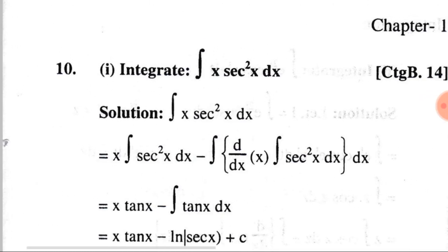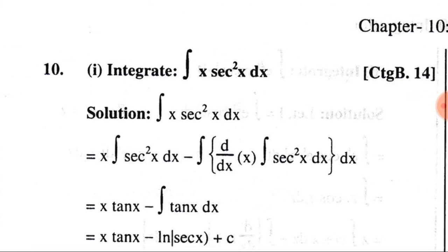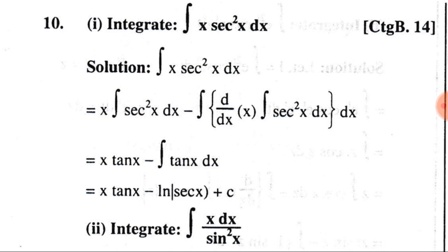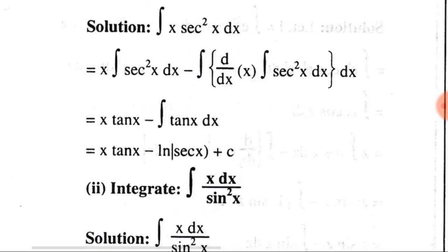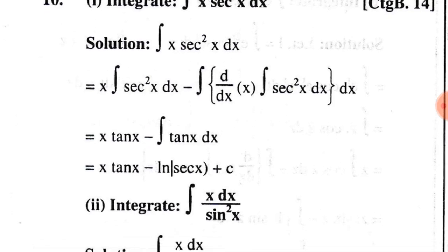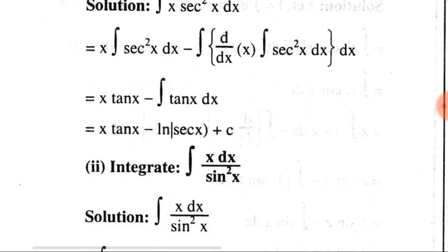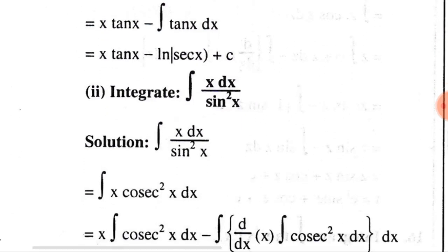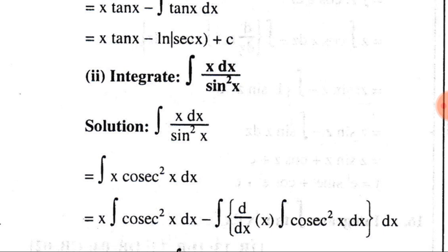For the integration of ∫x·sec²(x) dx, we consider x as the first function and sec²(x) as the second function. We know that the integration of tan(x) is log|sec(x)|. Applying the IBP formula, we find that ∫x·sec²(x) dx = x·tan(x) − log|sec(x)| + C.